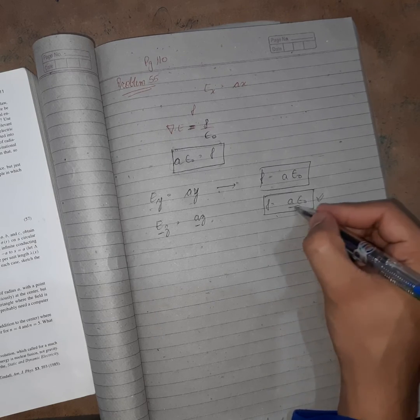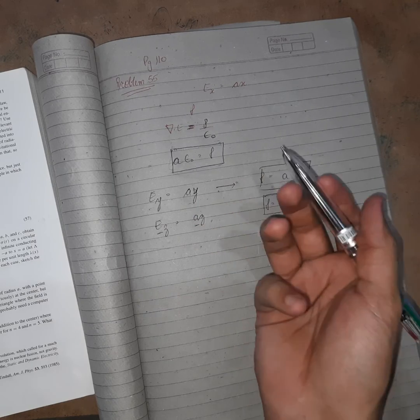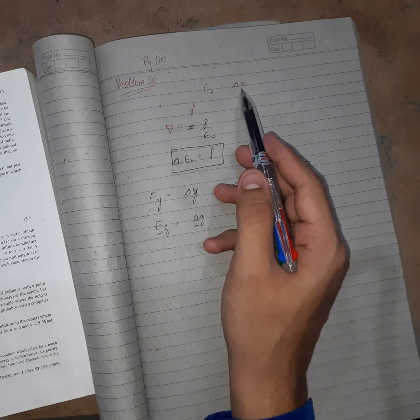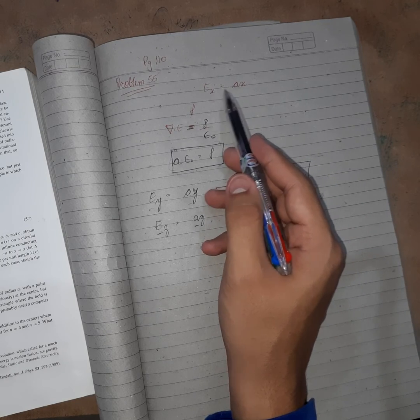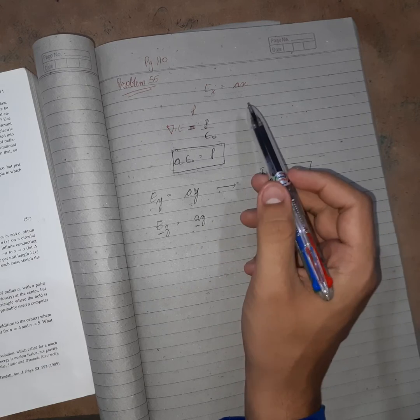That doesn't mean that if we have rho, suppose in any question we are given rho as a epsilon and we need to calculate the direction of electric field, that is not possible because the electric field component varies in x, y, and z—three components.